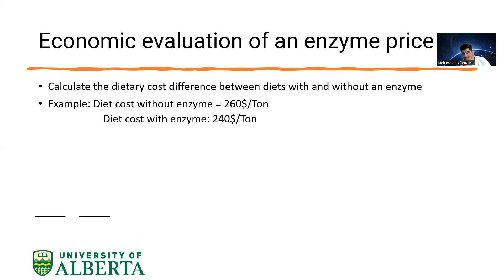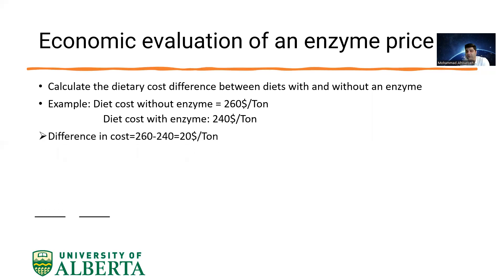As an example: let's imagine I formulated a diet without using the enzyme and the dietary cost is $260 per ton. Then I use that enzyme in the diet, decreasing the nutrient specifications. After calculating new nutrient requirements based on the enzyme matrix value, my dietary cost is now $240 per ton. The difference is $20 per ton — by using this enzyme, I reduced the dietary cost by $20 per ton.